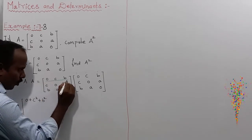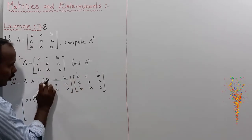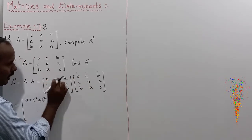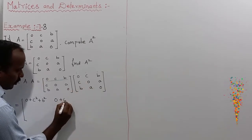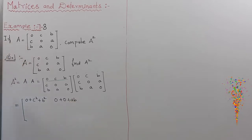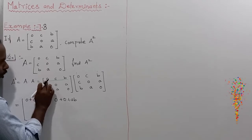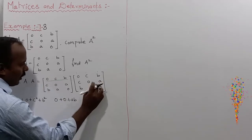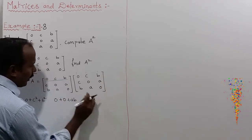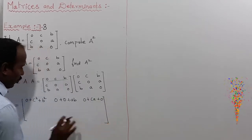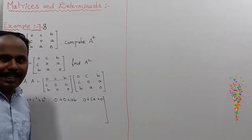For the (1,2) entry — first row, second column: 0×c = 0, plus c×0 = 0, plus b×a = ab. For the (1,3) entry — first row, third column: 0×b = 0, plus c×a = ca, plus b×0 = 0. So the first row is [c²+b², ab, ca]. First row completed.